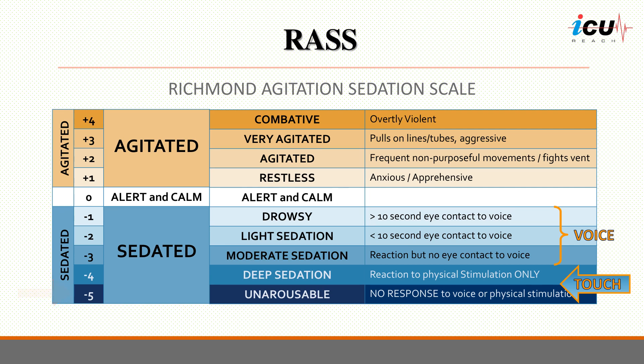Scores from plus 1 to plus 4 represent increasing levels of agitation. A score of plus 1 indicates that the patient is anxious and restless but not aggressive. At plus 2, the patient is agitated and exhibits frequent non-purposeful movement or is verbally aggressive. A score of plus 3 shows that the patient is very agitated, pulling or removing tubes or catheters, or is physically aggressive. The most severe level, plus 4, represents a patient who is overtly combative, violent, and poses immediate danger to staff, self, or others.